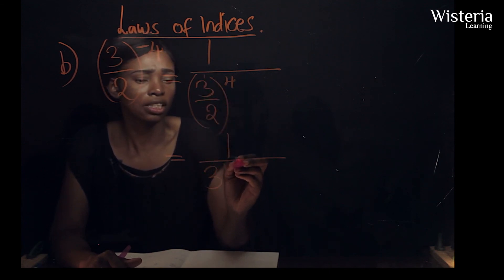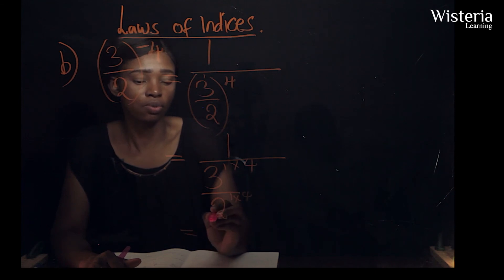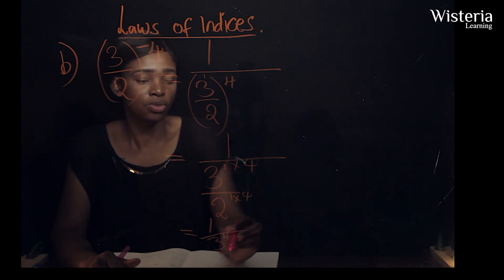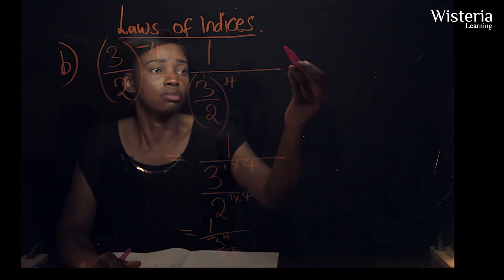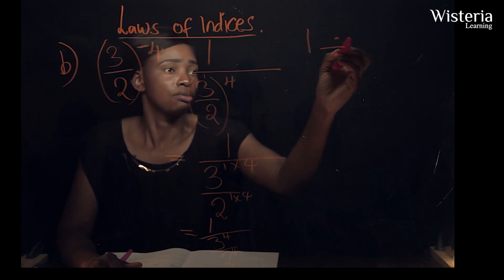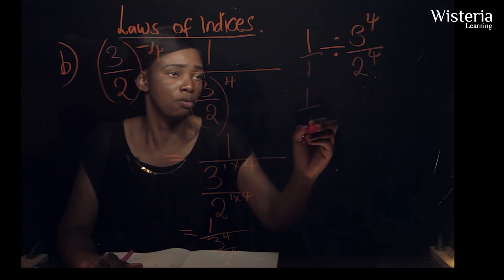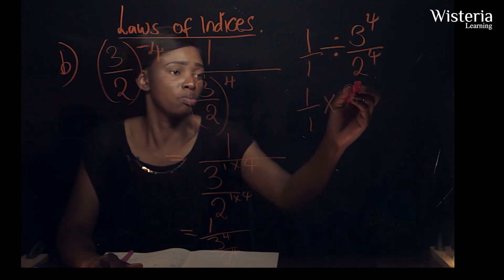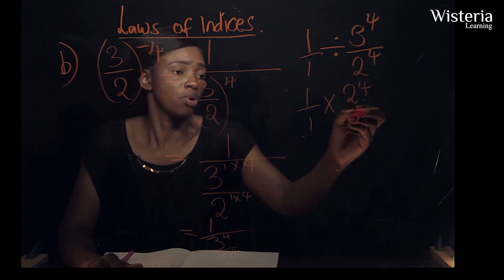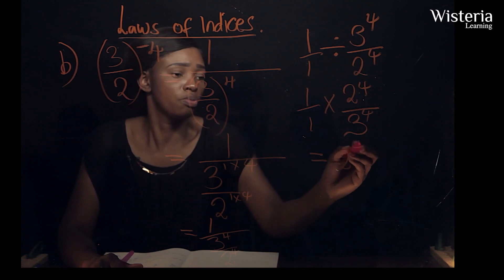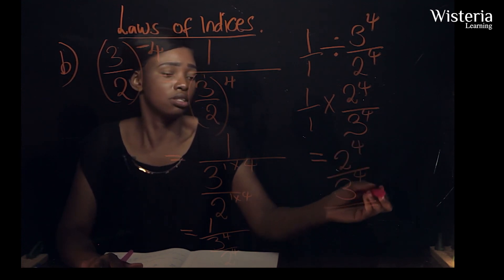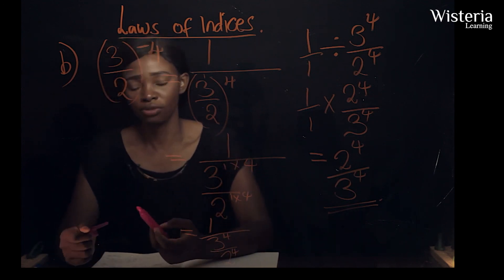This gives us one over three to the power one times four over two to the power one times four, which is one over three to the power four over two to the power four. Since we are dividing a fraction by another fraction, this is the same as one divided by three to the power four over two to the power four. Finding the reciprocal gives us two to the power four over three to the power four, which is our final simplified answer.